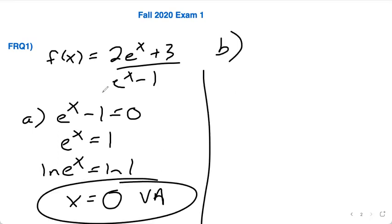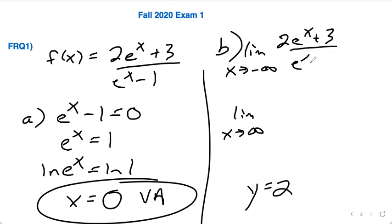Horizontal asymptotes, be very careful. I could easily see a student go, oh, the power is the same, so it's y equals 2. But you have to do the limit as x approaches negative infinity and the limit as x approaches positive infinity of this function. So you have 2e to the x plus 3 over e to the x minus 1, 2e to the x plus 3 over e to the x minus 1.